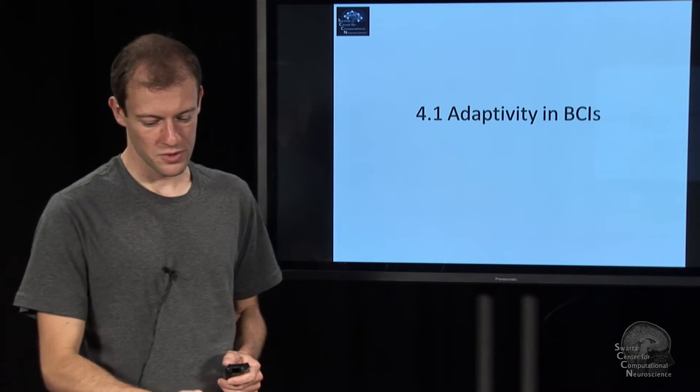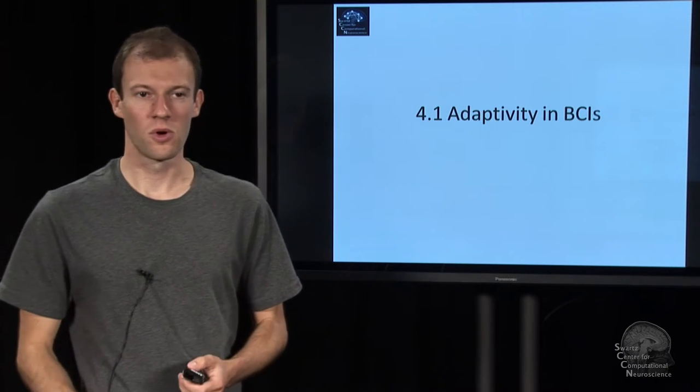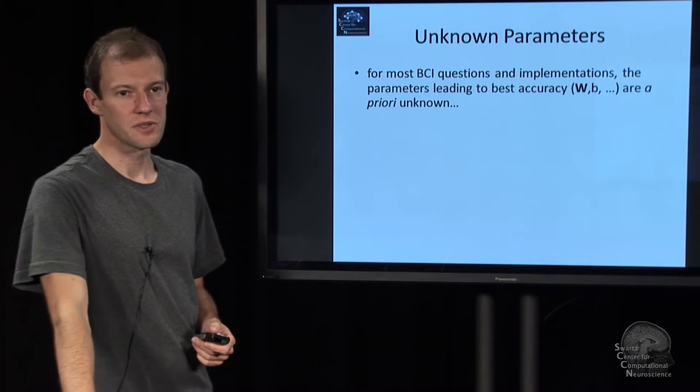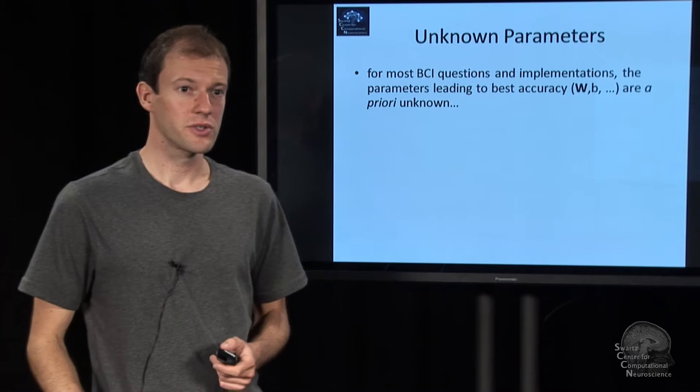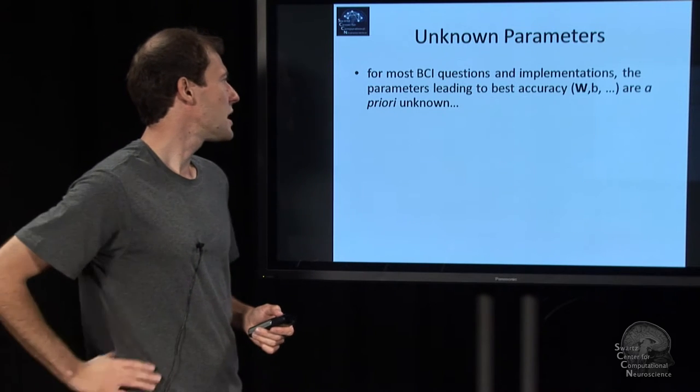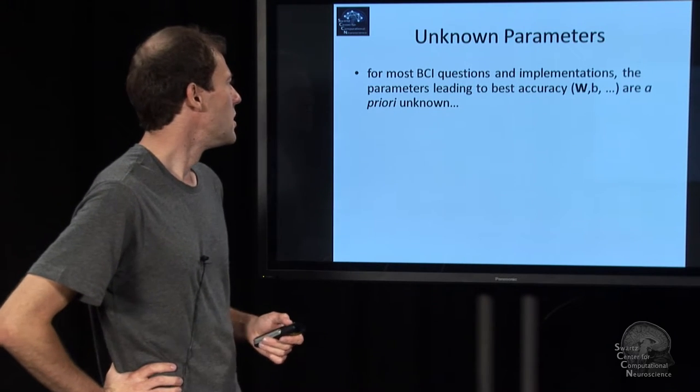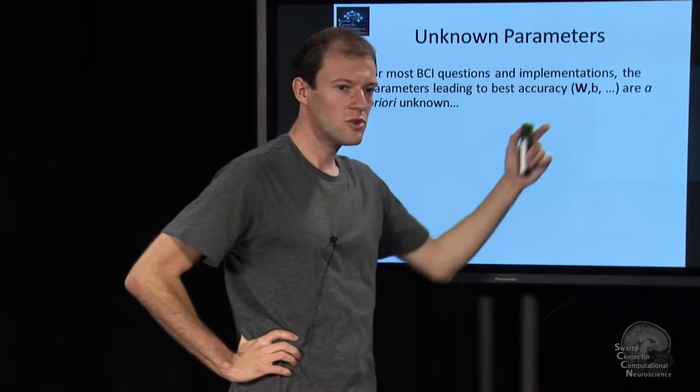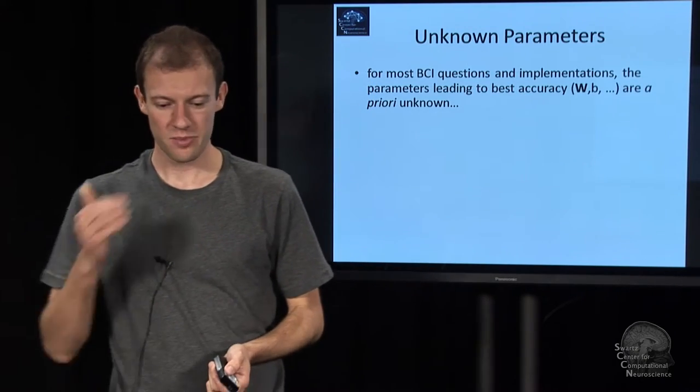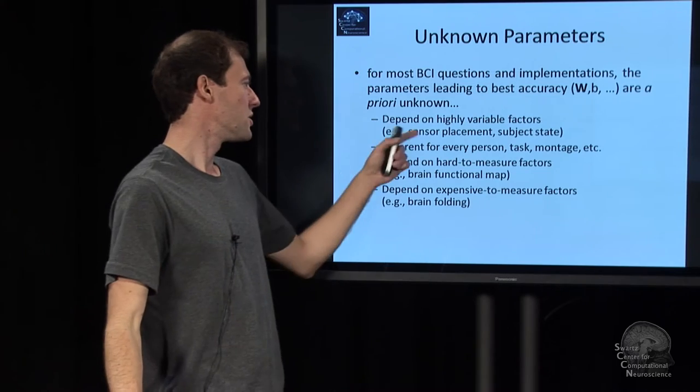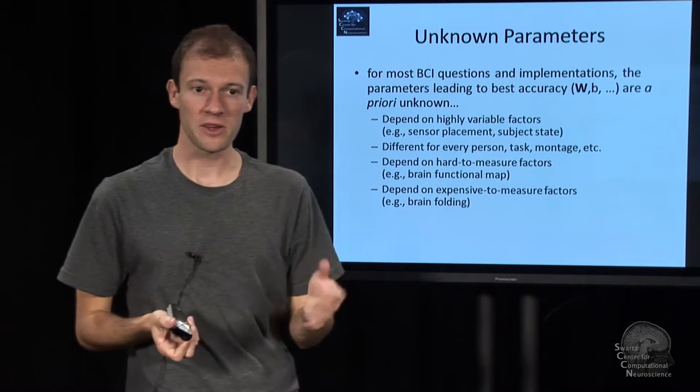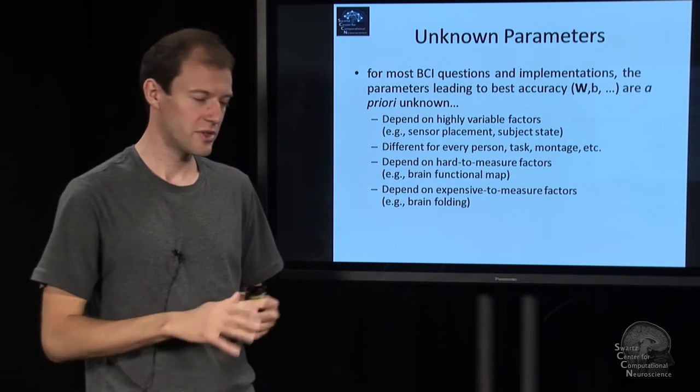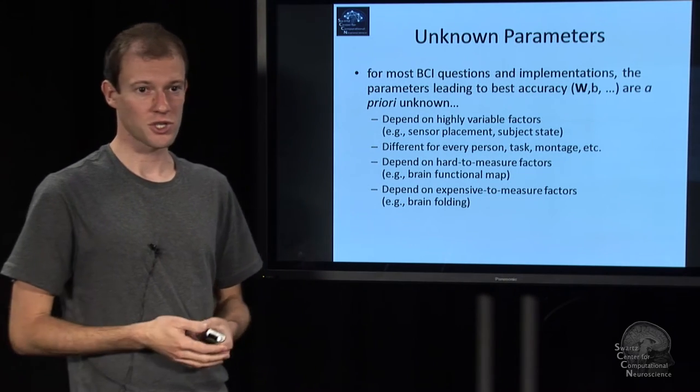The first module discusses the role of adaptivity in brain-computer interfaces. As I indicated in one of the earlier lectures, brain-computer interfaces happen to have parameters that are not usually known a priori. They depend on a variety of things. They depend on where exactly the sensors are, they depend on how the brain is folded for a given person that determines the forward projection, for example.